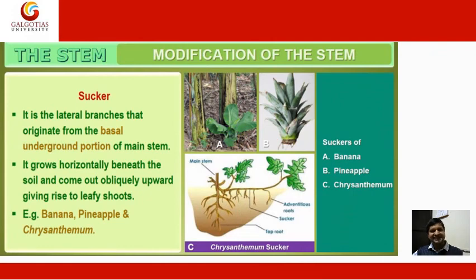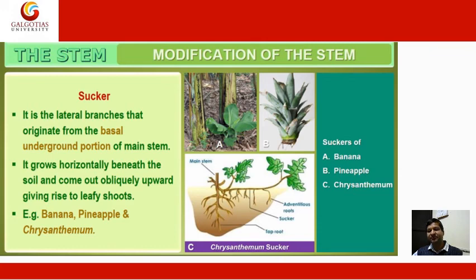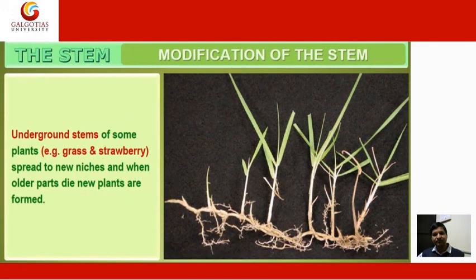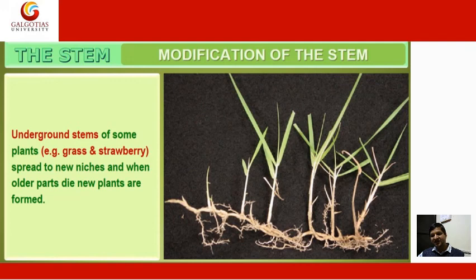Suckers are lateral branches that originate from the basal underground portion of the main stem. They grow horizontally beneath the soil and come out obliquely, giving rise to leafy shoots. Examples include banana, pineapple, and chrysanthemum. Underground stems of some plants like grass spread to new areas and when older plants die, new plants are formed.